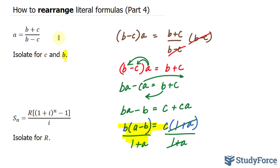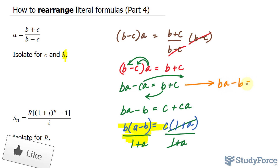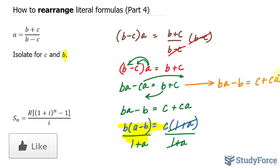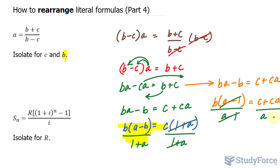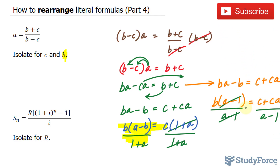They also want you to find what b is. Rather than going through all of this all over again, the steps are almost identical except for a difference at this stage. I had b·a minus b is equal to c plus c·a. Rather than factoring out a c, I can factor out a b on the left side, leaving me with b times a minus one is equal to c plus c·a. Dividing both sides by a minus one, this cancels out, leaving us with b isolated on the left side. So b is equal to everything on the right side.